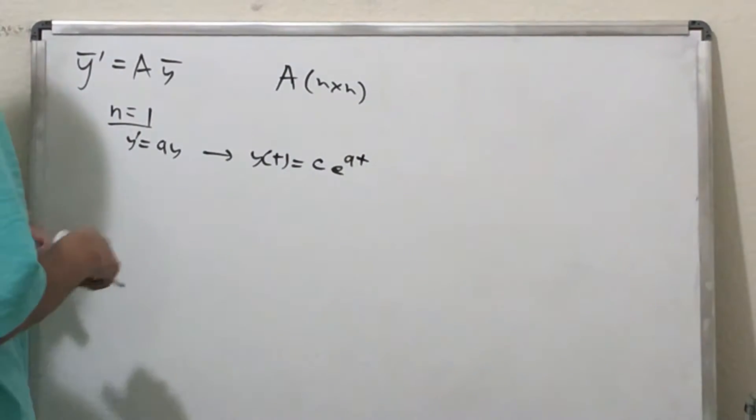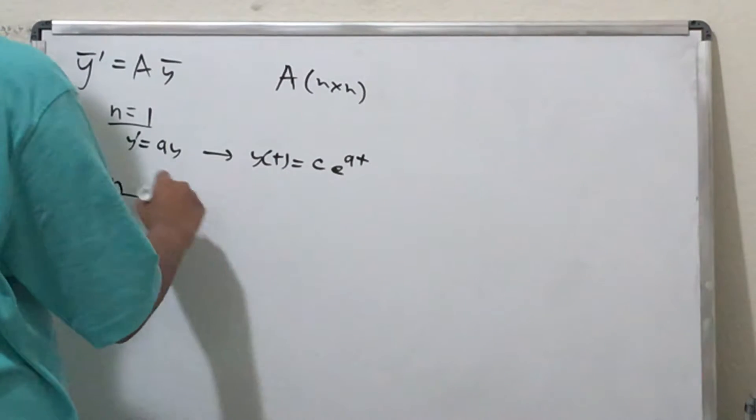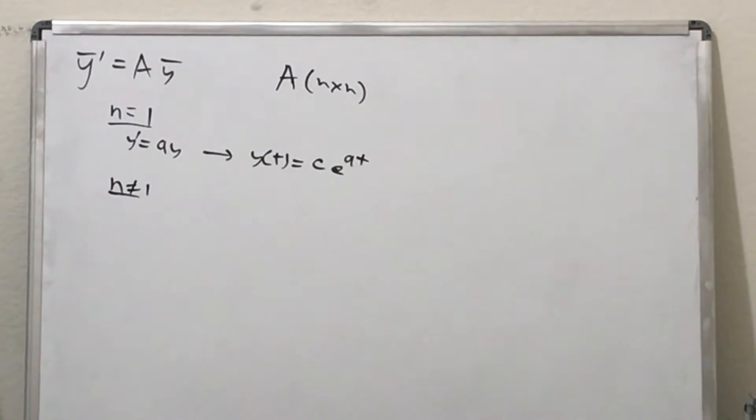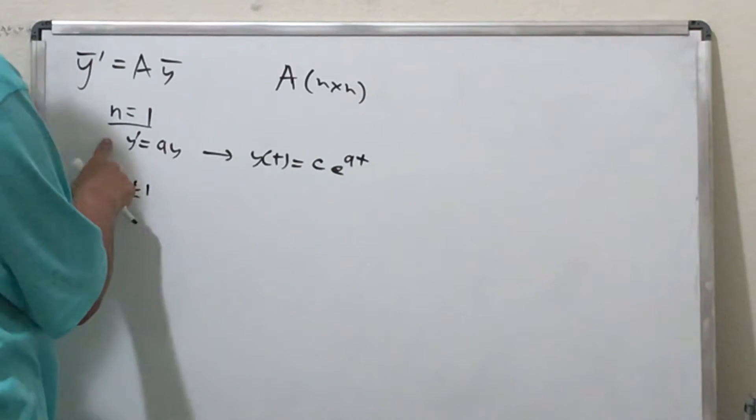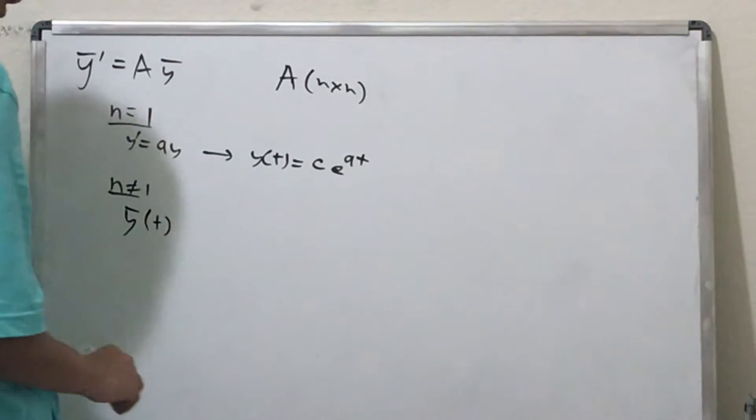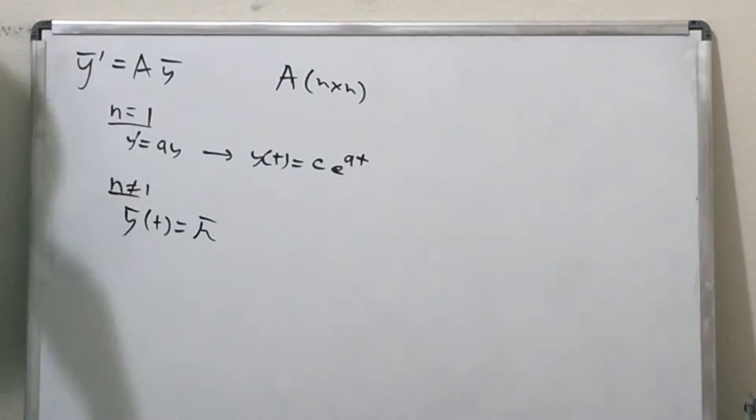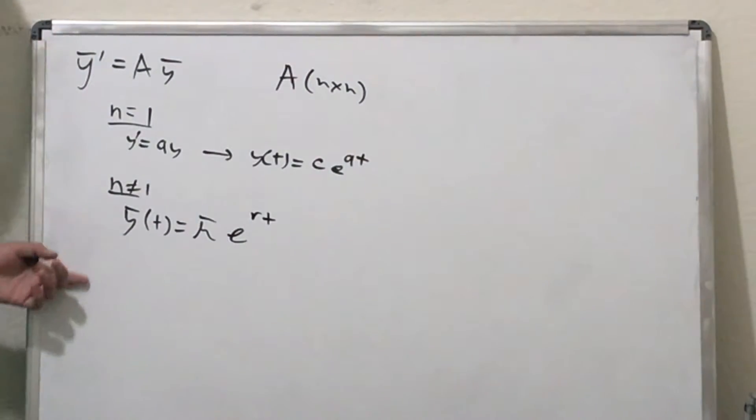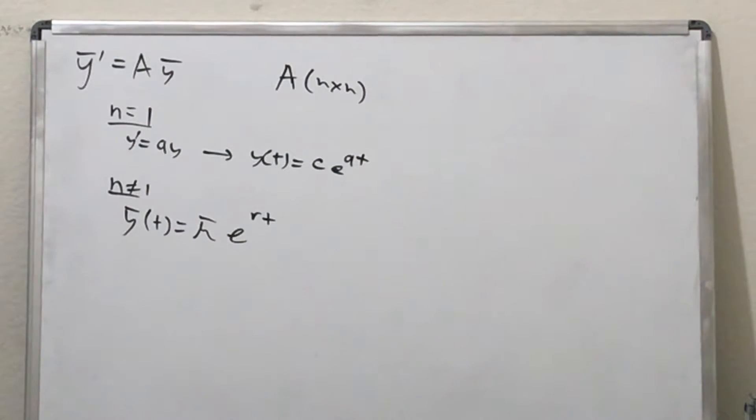Now let's take a look at general n. When n varies, you can assume that you can have an analogy to this case. So you can have y(t) being some constant μ times e^(rt). So this is our analogy.